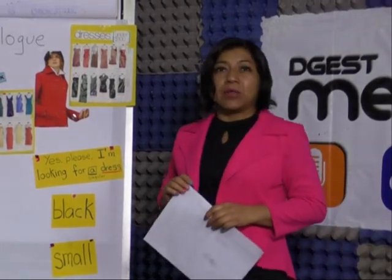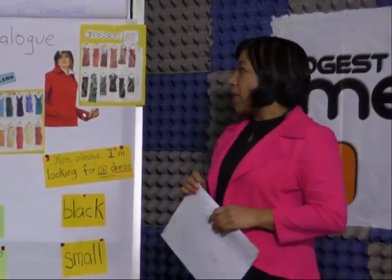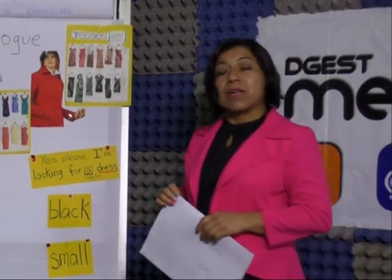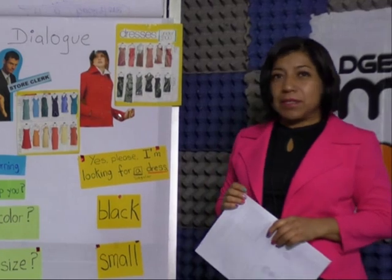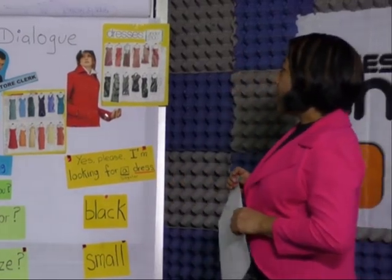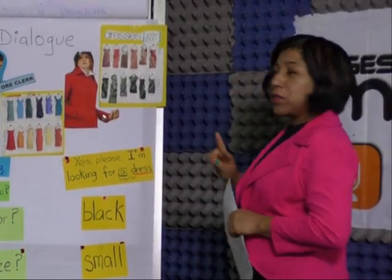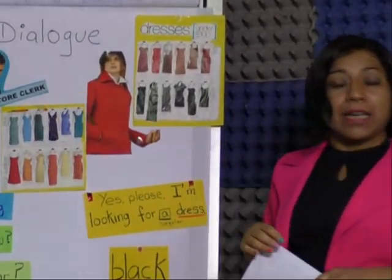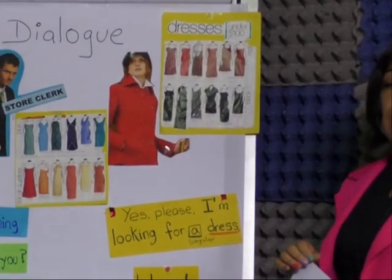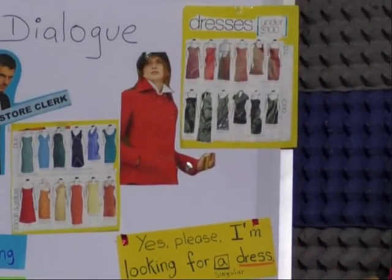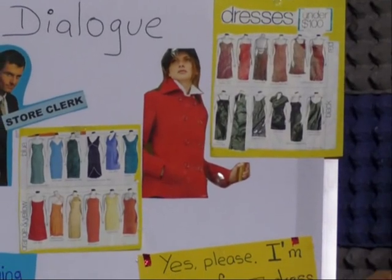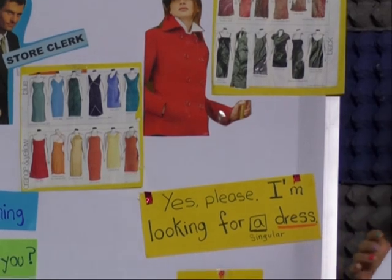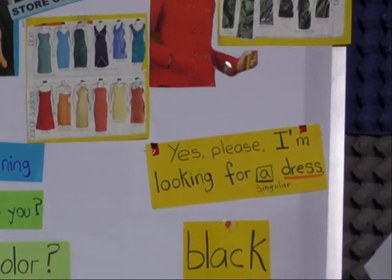Como recuerdan, para la asignatura de inglés de segundo grado, estábamos trabajando un diálogo relacionado con compras, porque se relaciona con la unidad 1, que habla de bienes y servicios. Acuérdense que trabajamos dos personajes importantes: el Store Clerk y The Customer. El Store Clerk es la persona que vende, y The Customer es la persona que va a comprar un producto. En este caso trabajamos lo relacionado con clothes, que son ropas, prendas de vestir.